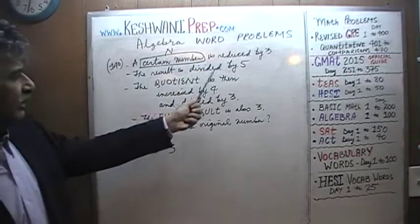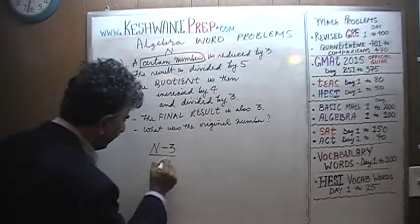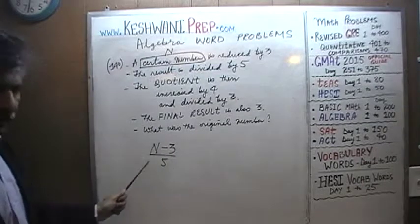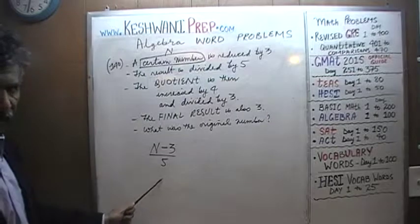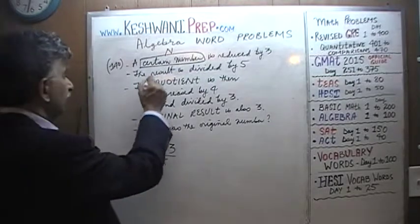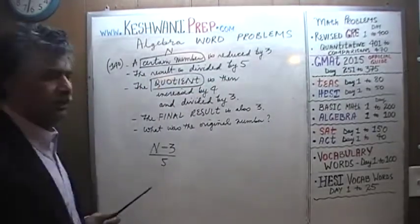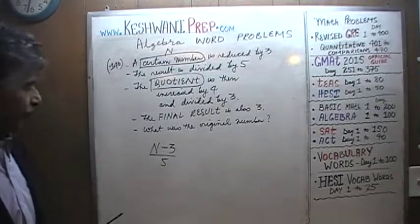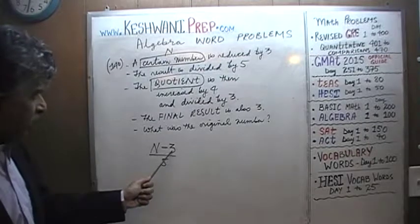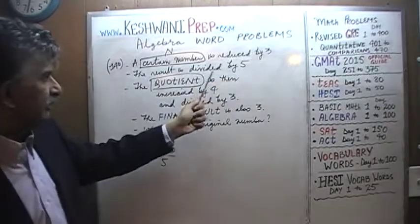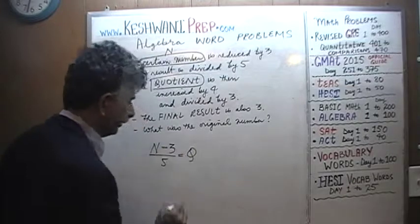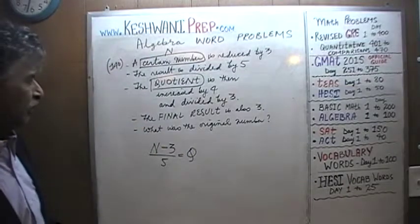The result is then divided by 5. And when you divide a quantity by another quantity, the net result of the division problem is what is known as the quotient. Quotient is just a very fancy way of saying the result of a division problem. So when we have a number, we reduce it by 3, we divide by 5. When we do that, we'll get a result. That result is called the quotient.